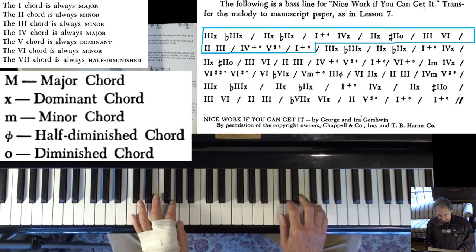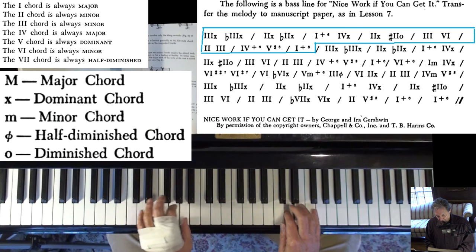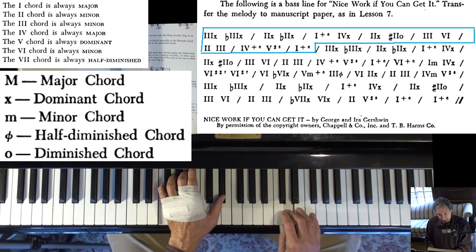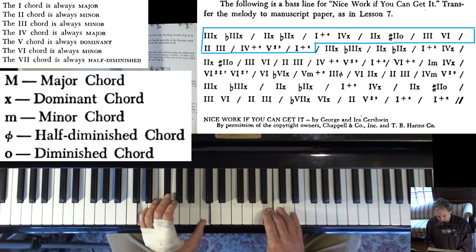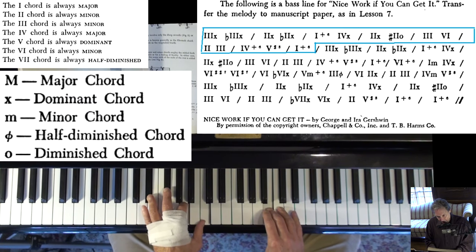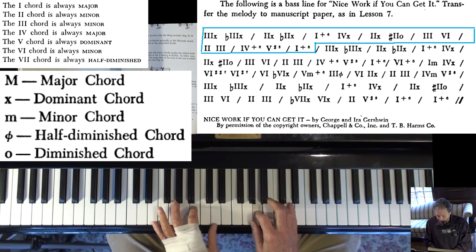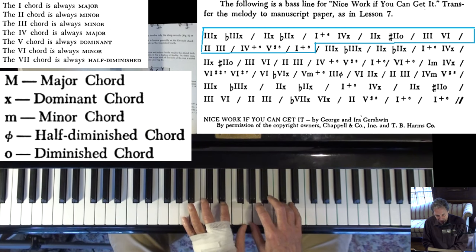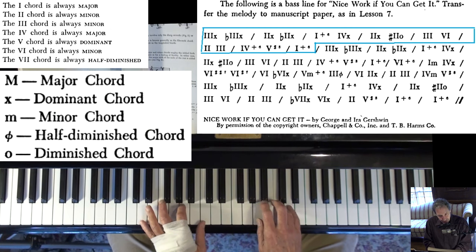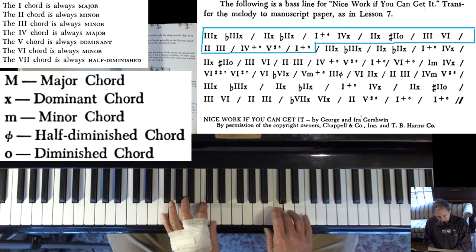Then the one, the plus, does not mean augmented. It just means add the 6. And then the 4, that's a dominant. And the 2 is a dominant chord, and then the sharp 2. A little O means diminished. And there's a 3 chord, you have to just assume that's minor, which it is. And the 6, and the 2.